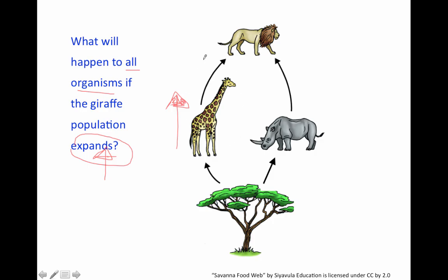So when looking at different situational food webs, just think about the food chain that particular organism belongs to. In this case the giraffe belongs with the tree, the giraffe, and the lion. So I'm just going to focus on that food chain and then worry about the rhino later. If the giraffe increases, there are going to be more predators for the tree, so the tree is going to end up decreasing. If the tree decreases because of the increase in giraffes, then the lions are going to increase because they're going to have more giraffes to eat. Now if the rhino doesn't have as much food to eat and there are more predators, it is absolutely going to decrease. Go ahead and erase it at this time.